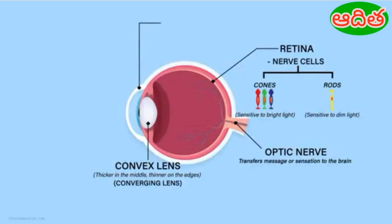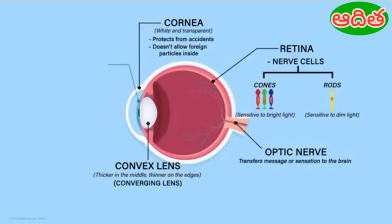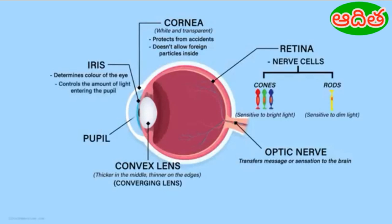Let's quickly recap. The human eye has a roughly spherical shape. The outer part called the cornea is a thick white transparent wall which protects the eye from accidents and keeps foreign particles from entering. Behind the cornea, the colourful part called the iris is present, with a small opening at the centre called the pupil. The iris controls light entering through the pupil by contracting and expanding. Behind the pupil, there is a converging lens which focuses light on the retina. The retina consists of two types of nerve cells — cones and rods — which transfer the message through the optic nerve.